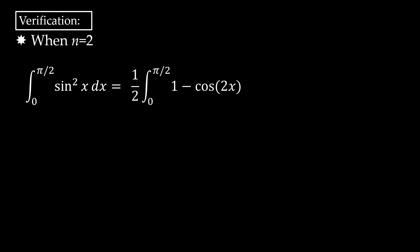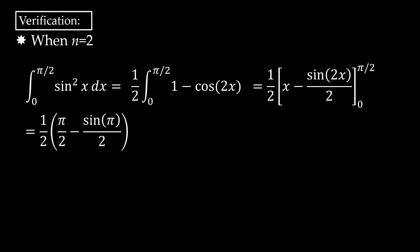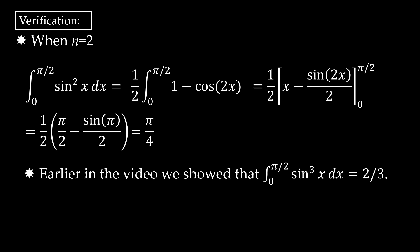Now let's briefly verify these results. For the integral from 0 to π/2 of sine² x dx, using the power reduction formula gives 1/2 times the integral of 1 minus cosine 2x from 0 to π/2. This evaluates to 1/2 times x minus sine(2x)/2 at π/2 and 0, giving 1/2 times π/2, or π/4 — which checks out with our previous result. Also, earlier in the video we showed that the integral from 0 to π/2 of sine³ x dx equals 2/3, so this is working correctly.